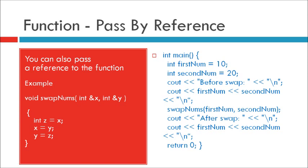In integer main, integer firstNum equal to 10, integer secondNum equal to 20. Cout before swap, cout firstNum secondNum. Call the function which will change the values. SwapNums in bracket firstNum comma secondNum.